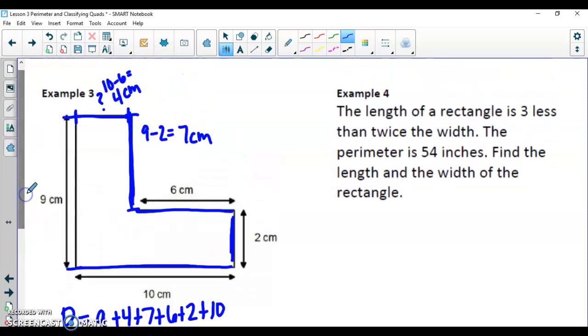Our next example is going to involve a little bit of algebra. This is what distinguishes you in being an advanced pre-algebra class versus being a regular pre-algebra class, is being able to put the algebra with this one. So this question reads, the length of a rectangle is 3 less than twice the width.